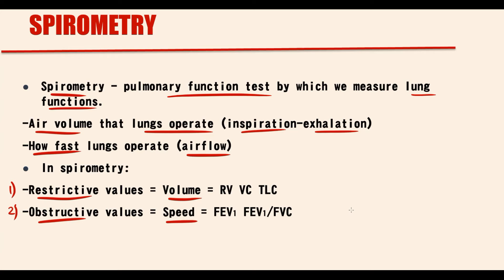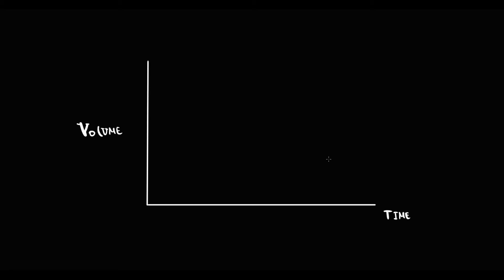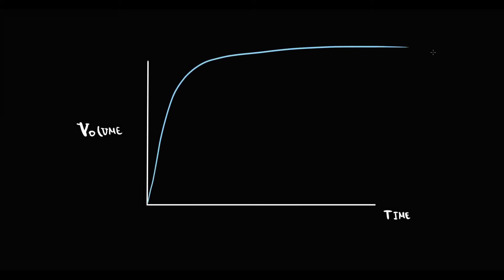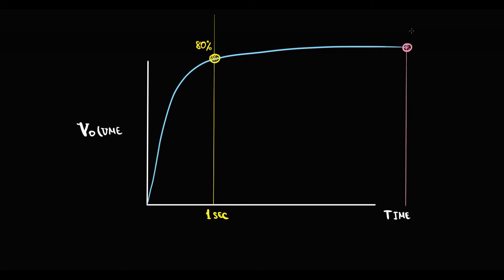We are also interested in how fast lungs can operate. The values that describe the speed of airflow we call obstructive values. On this graph we see volume and time as we breathe out as fast as we can. In normal conditions we breathe out over 80% of air during the first second, then exhale the other 20% over the next 5 seconds, giving us the forced vital capacity — the maximum volume of air that we can exhale. The amount of air breathed out as fast as possible in one second we call forced expiratory volume.